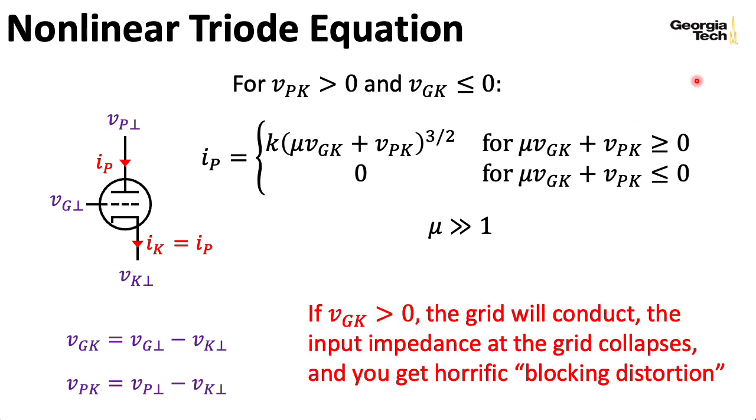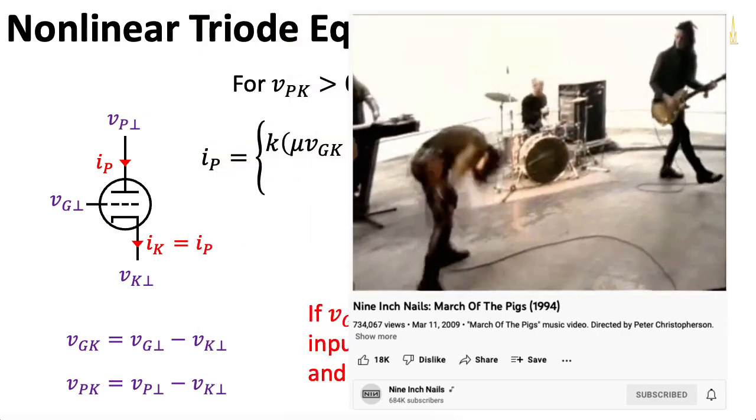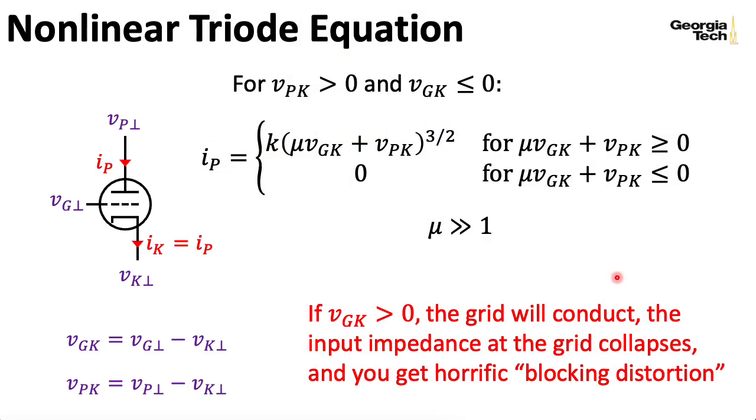If you have the grid going positive, that's an extreme failure mode. The grid in that case is going to conduct. Electrons will flow through it. The input impedance at this grid, which is normally effectively infinite, will totally collapse. And you get a kind of distortion called blocking distortion. And that's a disaster. That's a kind of distortion that not even mid-90s era Trent Reznor would like. It sounds like a farting swamp dragon that just ate a Volkswagen.